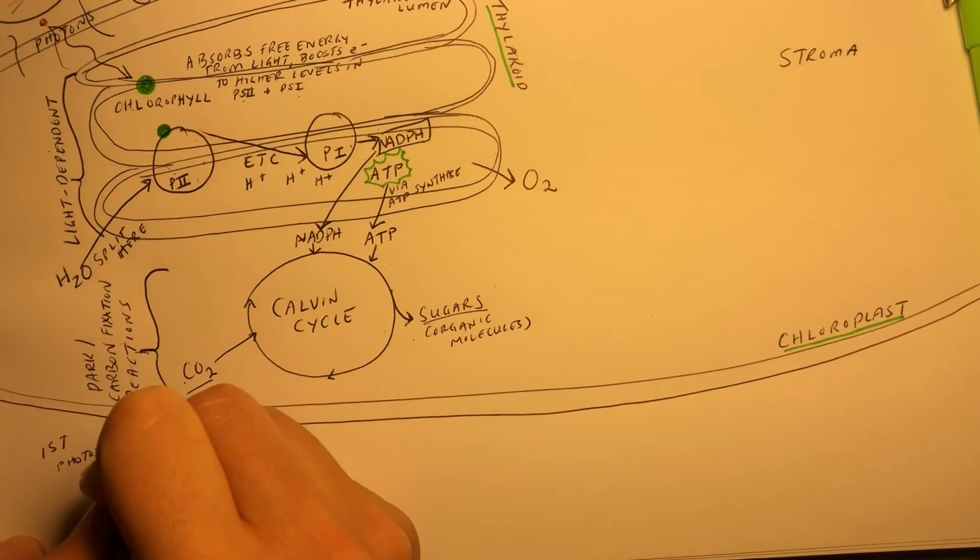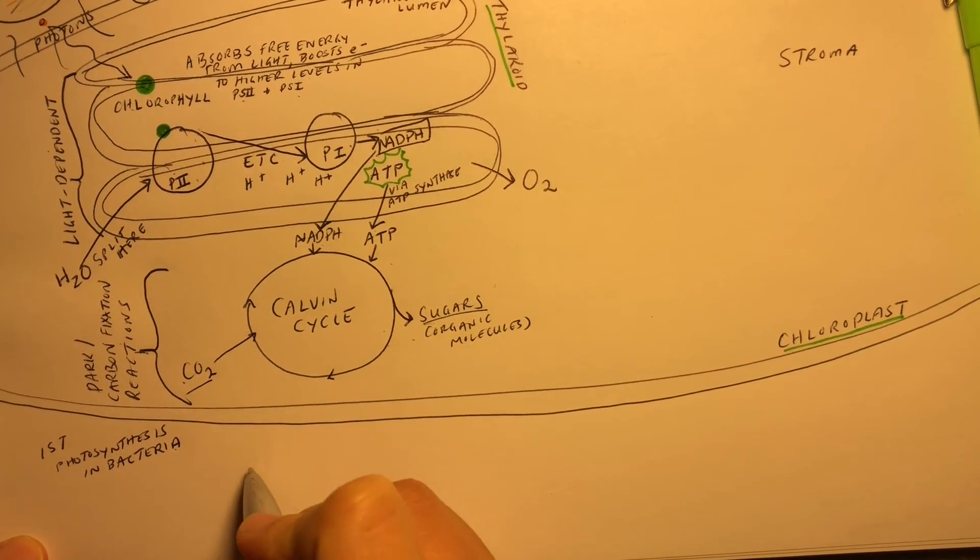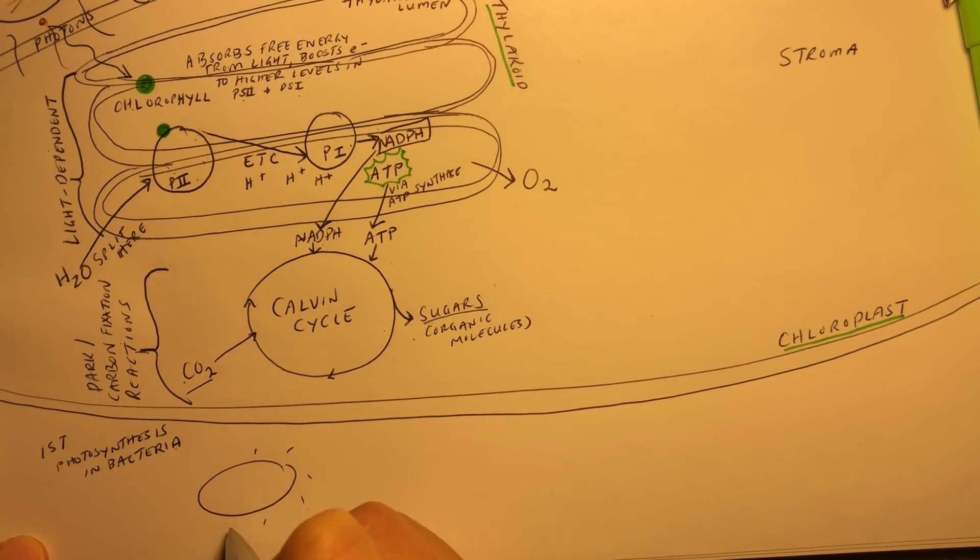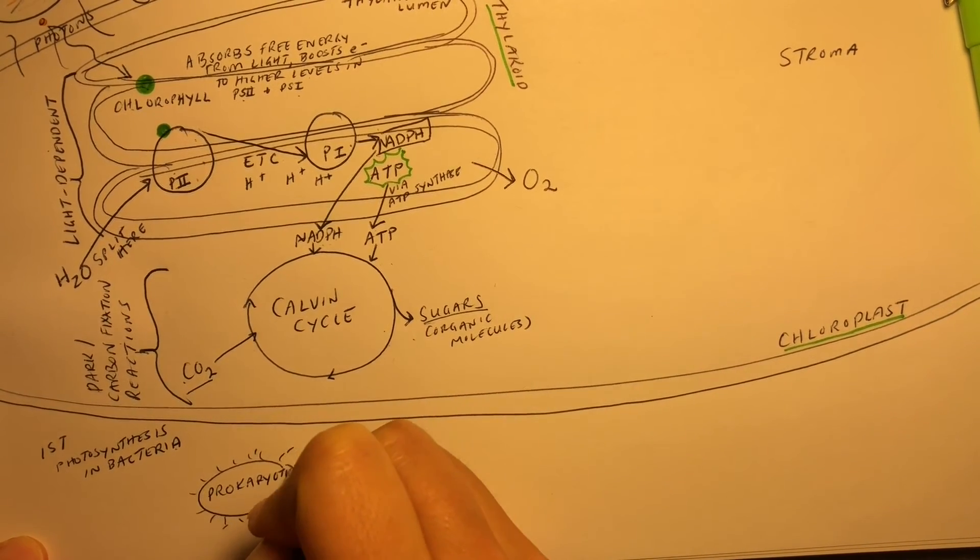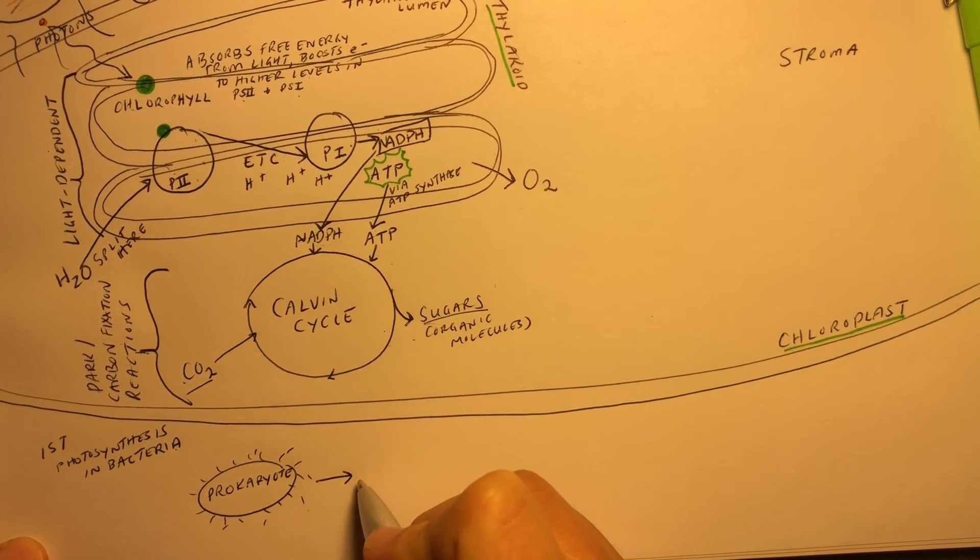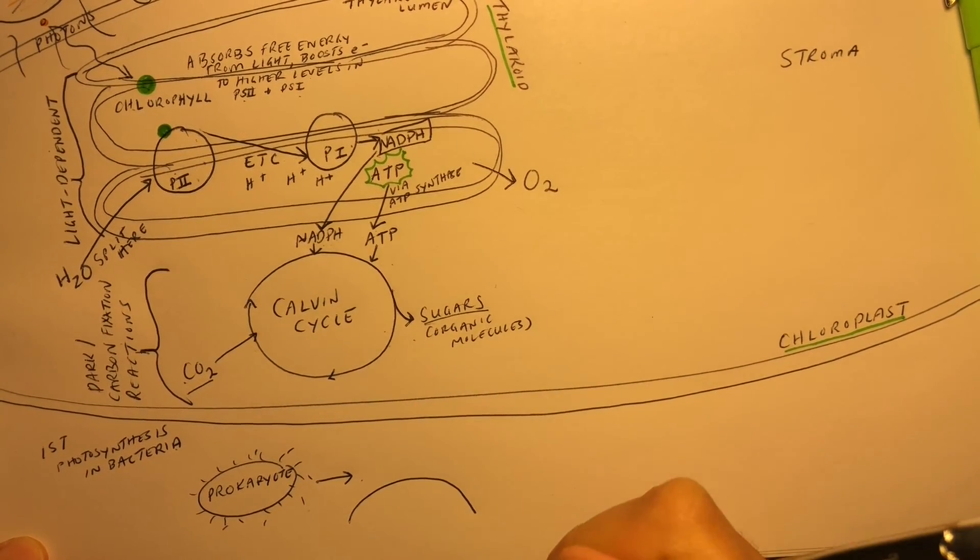So, how did all of this begin? Photosynthesis first evolved in prokaryotic organisms. After lots of cyanobacteria started producing oxygen in photosynthesis, we had an oxygen boom on planet Earth.